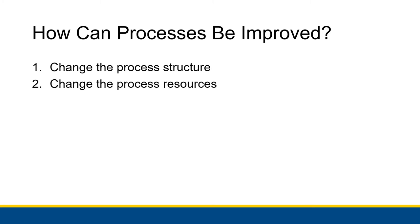Changing the process resources could involve a number of things. It could be changing the budget or the number of people working on specific activities. If a specific activity is taking a very long time and is causing some sort of deadlock in the process, maybe assigning more people towards that activity — whether that's hiring people or reassigning existing employees — could increase how efficient that process is. Even through automation, adding an information system as a resource that the process can use to automate things that take a long time can be another way of increasing effectiveness and efficiency. Giving more resources where they're needed, or moving resources around, can be a way of improving a process.